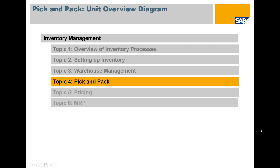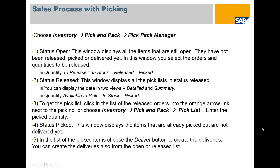Let's start with pick and pack. The sales process with picking allows you to come up with a list to go through your warehouse and select the items that are needed. In order to start pick and pack, go to Inventory, Pick and Pack, and the Pick and Pack Manager.